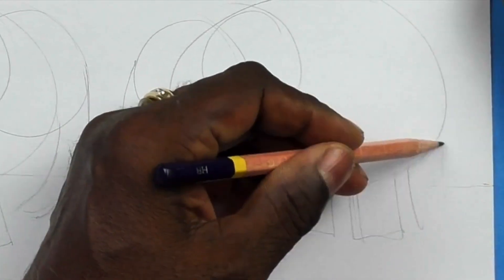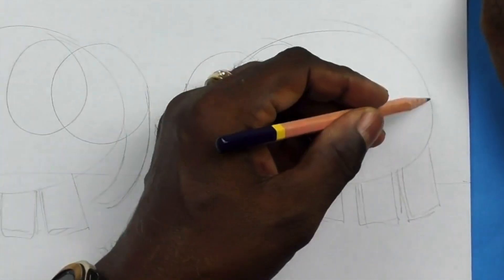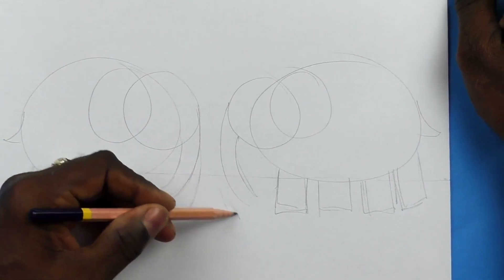You've probably guessed that the difference between Elmer and Wilbur is that Wilbur is black and white.